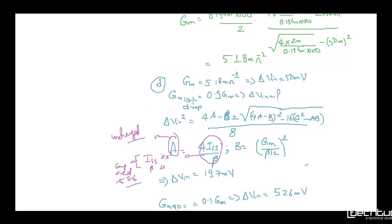The fourth sub-part is interesting. GM is reduced by 10%, so it's 0.9 times GM. We need to find delta VIN. Delta VIN square equals 4A minus B plus minus root of 4A minus B whole square minus 16 times A square minus AV, divided by 8. A is 4 ISS by beta. With respect to problem session 6, beta has doubled and ISS has doubled with respect to problem 5, but A remains unchanged. Delta VIN change is 197 millivolts, same as problem session 6.